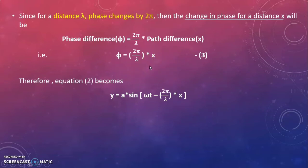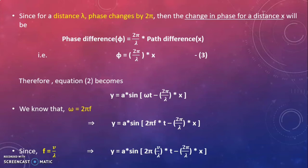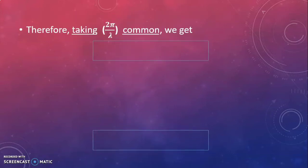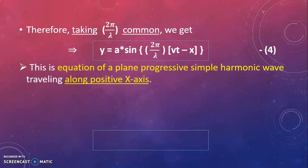We know that ω = 2πf, so y = a sin(2πft − (2π/λ)x). Since f = v/λ, we get y = a sin((2πv/λ)t − (2π/λ)x). Taking (2π/λ) common, we get y = a sin((2π/λ)(vt − x)). This is the equation of a plain progressive simple harmonic wave traveling along the positive x-axis.